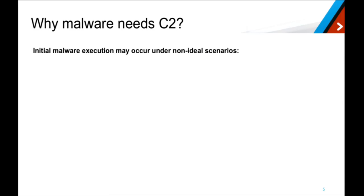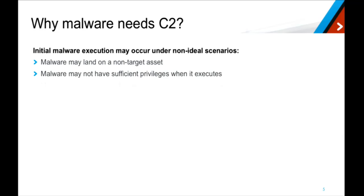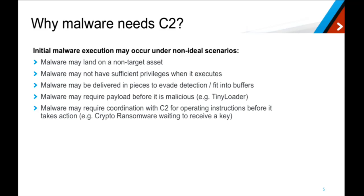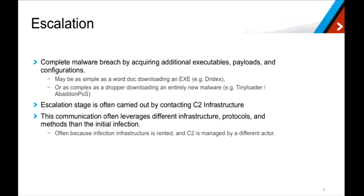Why does malware even need command and control channels? Often when an asset is breached it's not under the best scenarios — it may happen on an asset that isn't the ultimate target, doesn't have the information the attacker is looking for, might not have sufficient privileges. Especially when dealing with exploits, you have a very small buffer in which to fit the actual payload, so you have to deliver it in pieces. A lot of malware, especially crimeware, is basically shipped bare bones and needs to get more information before it can pull off whatever it's trying to do. That's where command and control comes in.